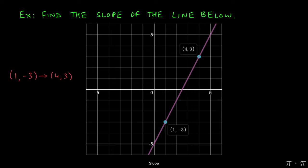Looking at the line from left to right, we can start at the point 1, negative 3 and think about what we would need to do in order to get to 4, 3.